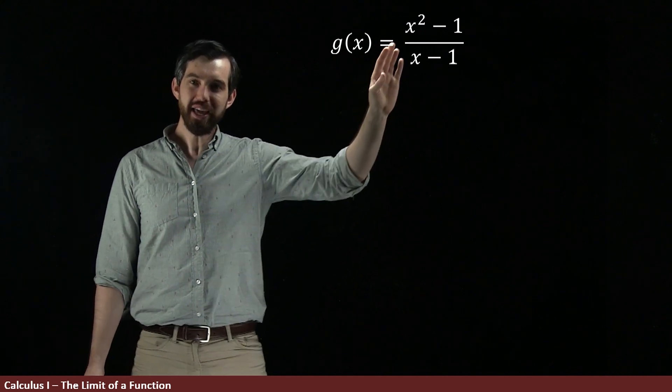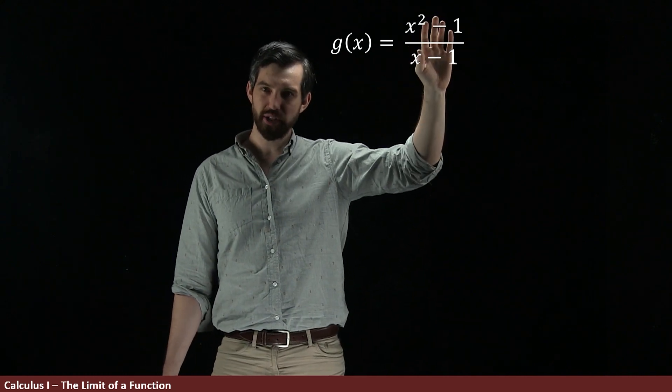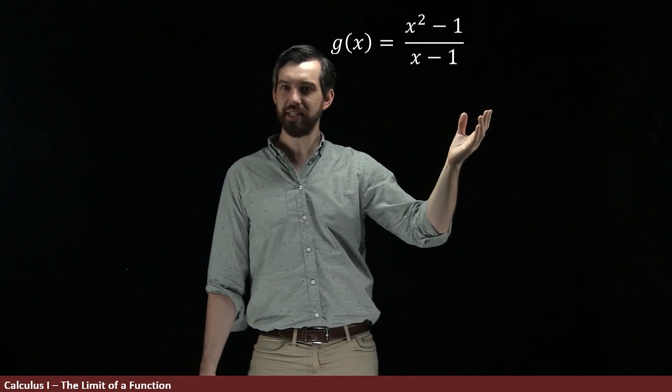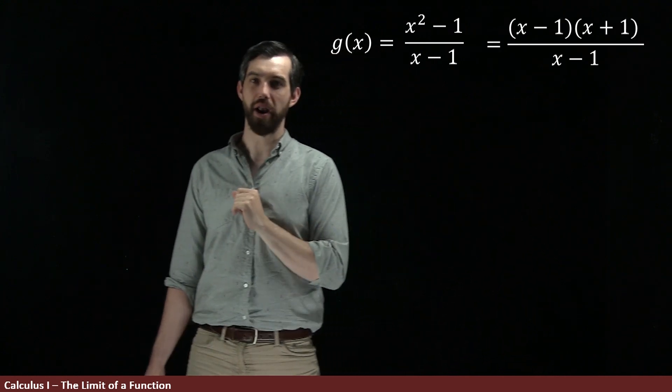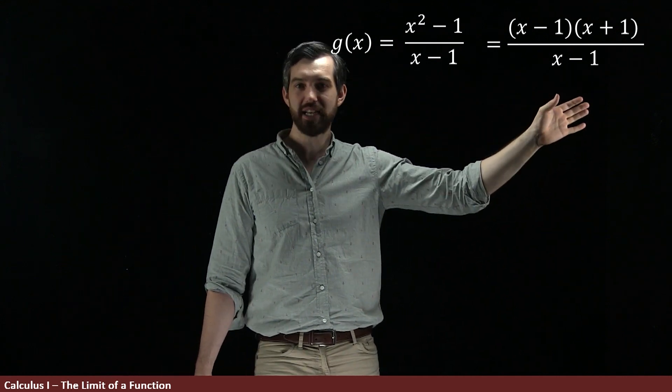So indeed, if we try to factor x squared minus 1, then what we're going to get is this is the same thing on the numerator as just x minus 1 times x plus 1. And then indeed, we have this x minus 1 on the bottom.